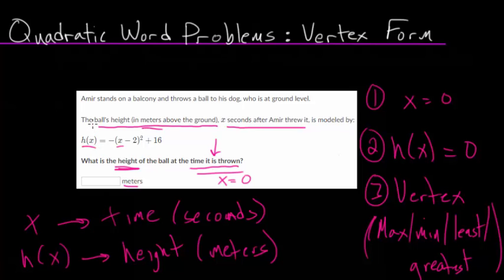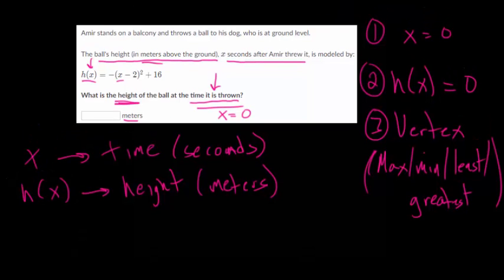So all we have to do is go to our function and plug in zero and figure out what the height would be. So let me make some space so we can do that. And we're just trying to figure out what h of zero is.